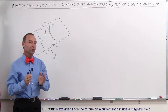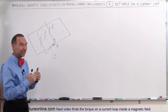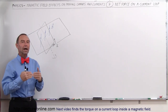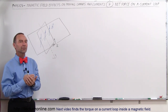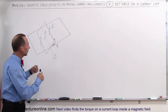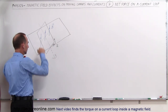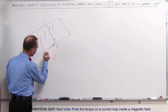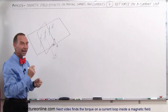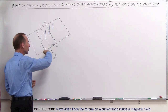Welcome to ElectronLine. In this video we're going to try and establish the forces on a current loop inside a magnetic field. This current loop is a continuous line with current flowing around it in this direction.